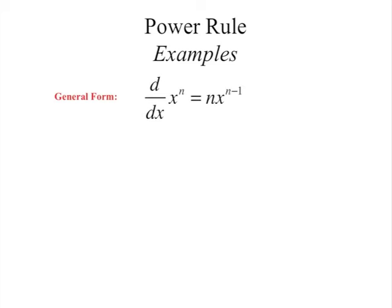Let's start with the power rule and the general form. If you were asked to differentiate something such as x to the n, its derivative would simply be n multiplied by x to the n minus 1. You bring down that exponent and then subtract 1 from the actual exponent.